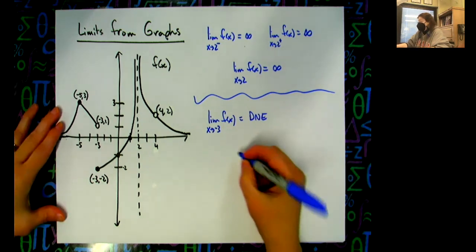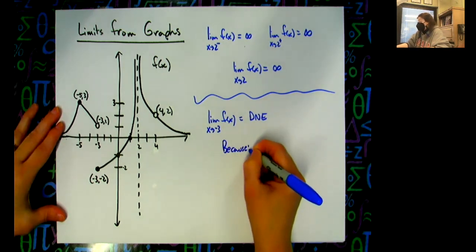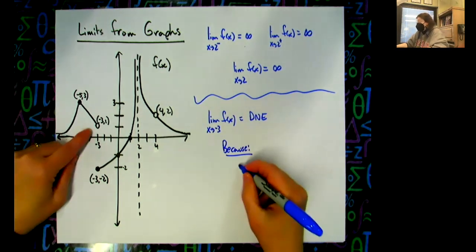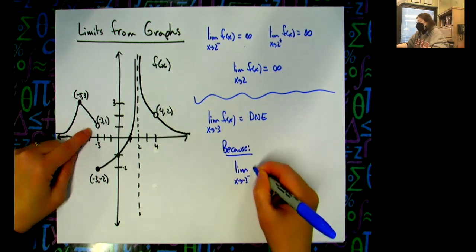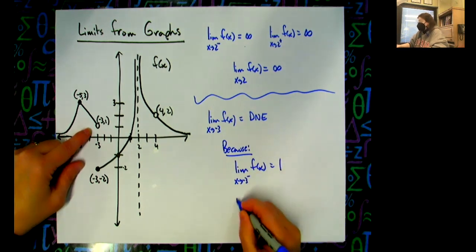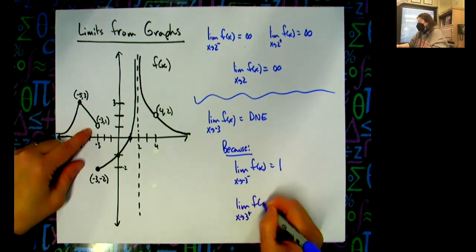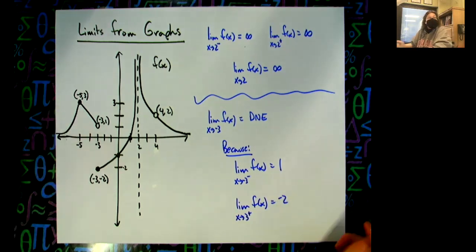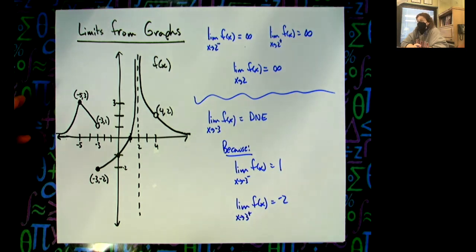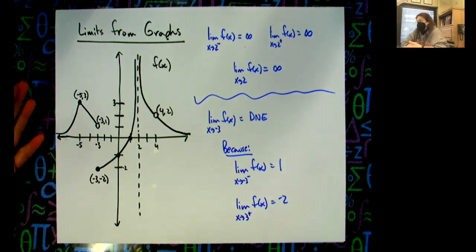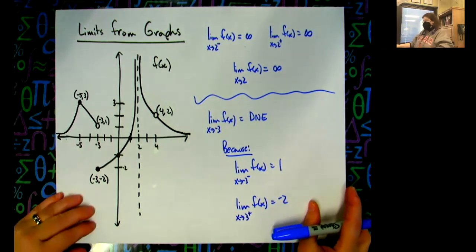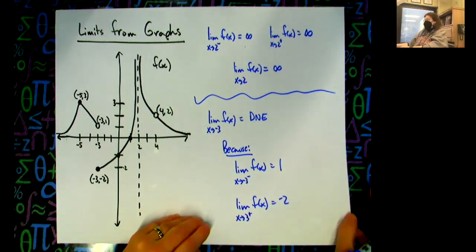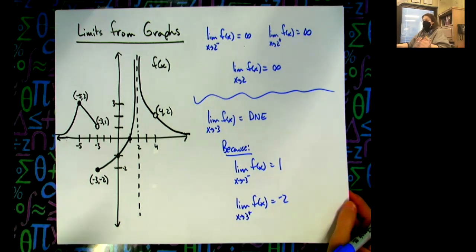You don't have to write the reason, you can just write 'does not exist,' but it's because the limit as x approaches negative three from the left equals one, and the limit as x approaches negative three from the right equals negative two, and those two values are not equal. That was the overall gist from yesterday. It's going to take time — as we do this I point to the right place on the graph and ask the right questions. You'll have to get to where you do that on your own, but we will practice this multiple times.